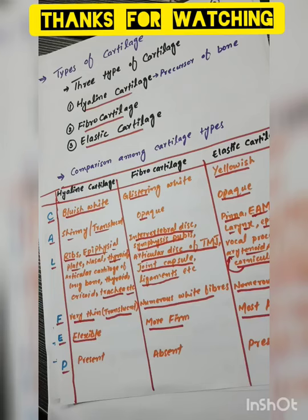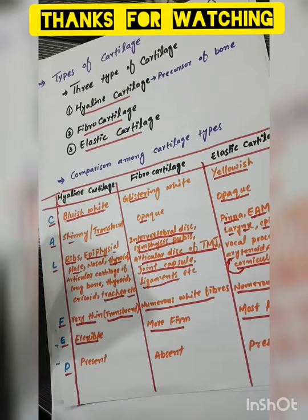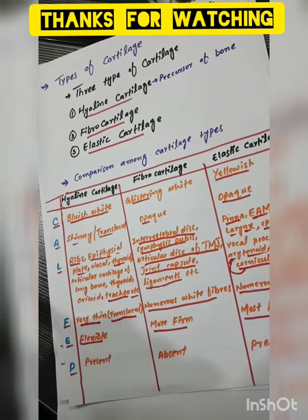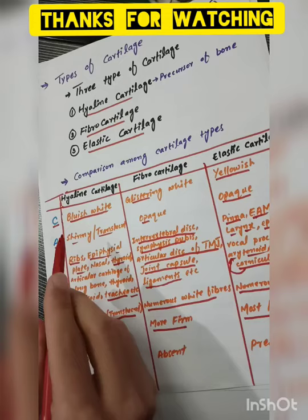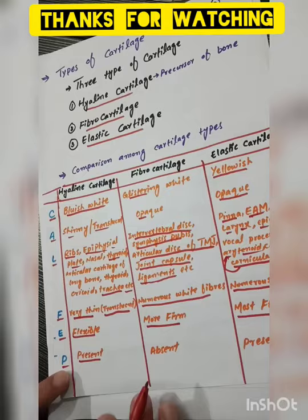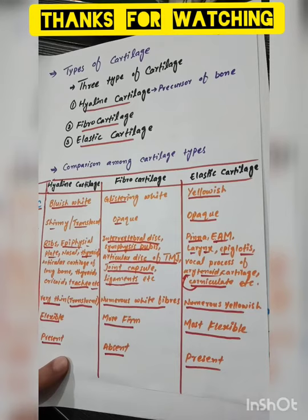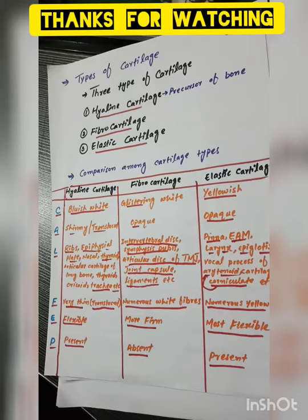The outer covering of cartilage is called the perichondrium, just as the outer covering of bone is called the periosteum. Hyaline cartilage has perichondrium. Fibrocartilage is absent of perichondrium. Elastic cartilage has perichondrium present.